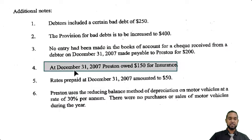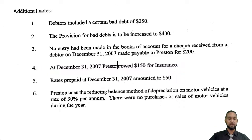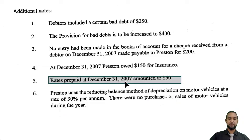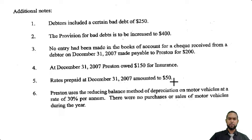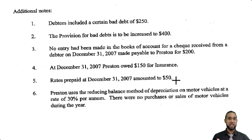Item four: at December 31st, 2007, Preston owed $150 for insurance. That's an accrued expense, which we know we're going to have to include in the income statement as well as the balance sheet. Item five says rates prepaid at December 31st, 2007 amounted to $50. A prepaid expense is a current asset, so that's going to go in the balance sheet. We also subtract any prepaid amounts from the amounts in the trial balance before inclusion in the income statement.